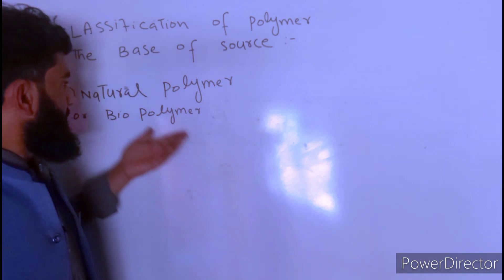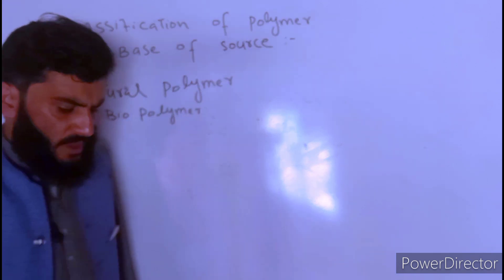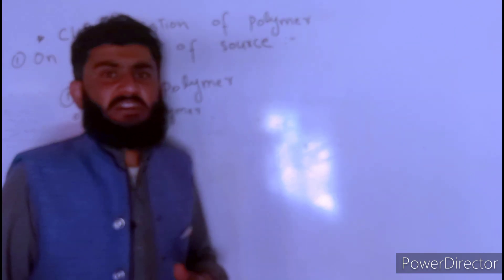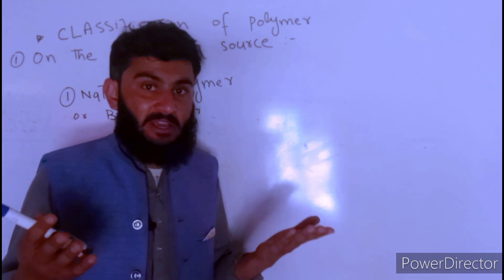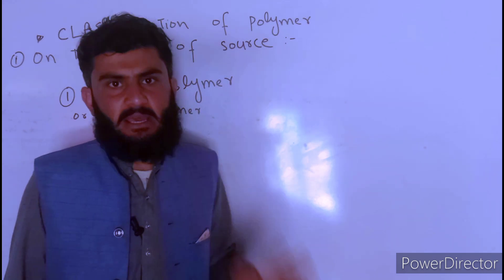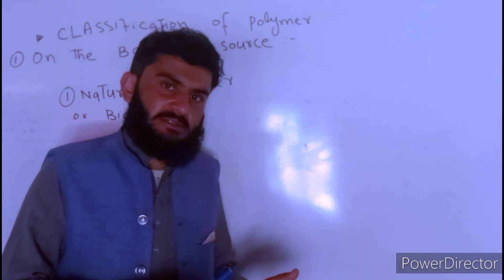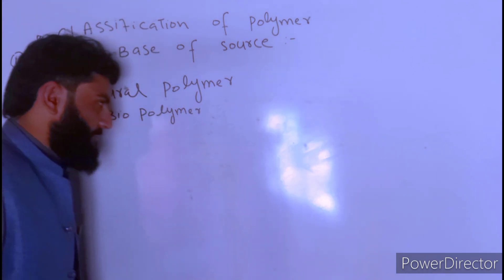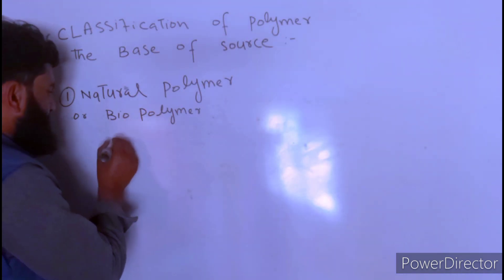The first class is natural polymers, also called bio polymers. Natural polymers are those polymers which are obtained from nature, specifically from plants and animals.